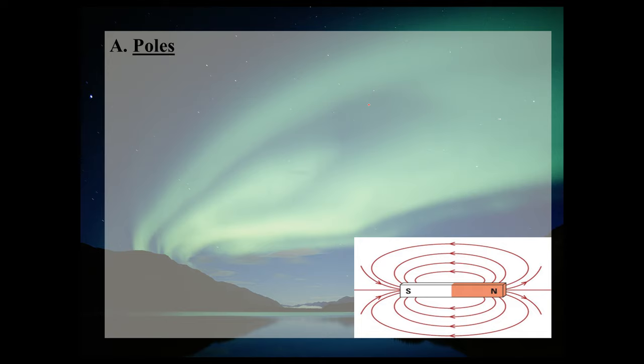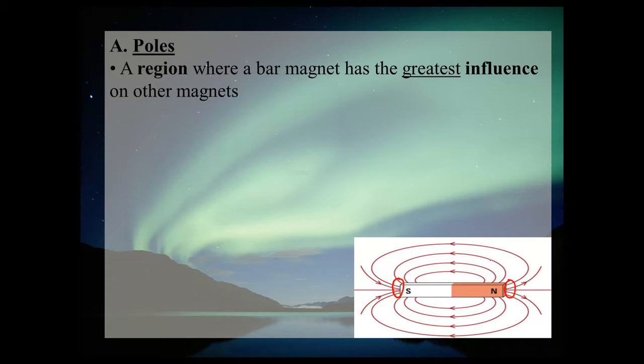If you look at the diagram, you're presumably familiar with what a north and south pole is. If you look at the region surrounding the poles, you can see that the field lines are very densely packed together. One way of defining what a pole is: it's a region where the magnetic field is the strongest, which means the magnet has the greatest influence on other magnets there. If you took another bar magnet and put its north pole close to the south pole, it would attract very quickly because the region of influence is very strong near that pole.